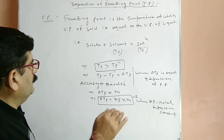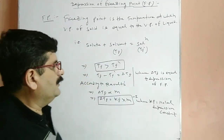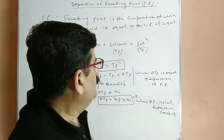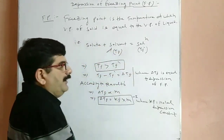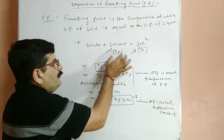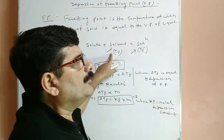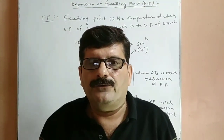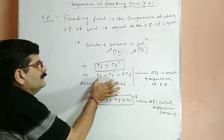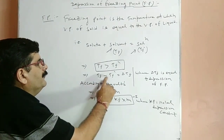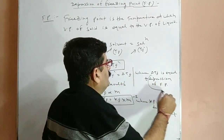Let us consider formation of solution by mixing solute and solvent. In this case also, our solute becomes non-volatile and non-electrolyte in nature. In this solution, two types of freezing point are possible: the freezing point of solvent, and the freezing point of solution. The freezing point of solvent is always greater than the freezing point of solution. Freezing point is inversely proportional to vapor pressure, so Tf is greater than Tf dash. The difference of two freezing points, Tf minus Tf dash, is called delta Tf, which is the depression of freezing point.